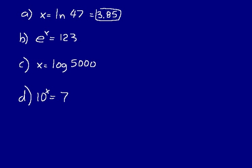Remember what that means: 3.85 is the exponent for a base of E. So we can write E to the 3.85 equals 47 — just to help us think about what we're doing. When we take the logarithm of a number, we're finding its exponent for that base. If it's a base E logarithm, the base is E; if it's a base 10 logarithm, the base is 10.